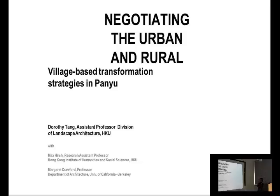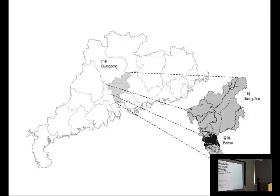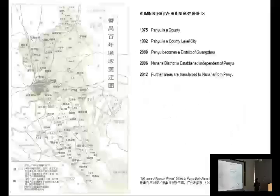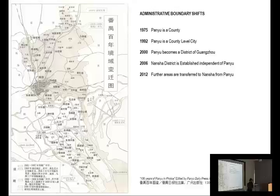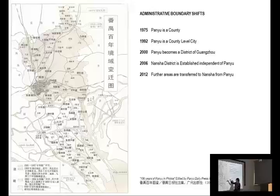Just a little bit of background. Pan U is a district of Guangzhou City, part of Guangdong Province. Guangzhou itself is fairly large. What's really interesting about Pan U is that it has changed a lot. This map shows the shifting administrative boundaries of Pan U from about the 1920s, when it was part of Guangzhou City. I'm going to start from 1975, focusing on the last 30 years of development in this area.